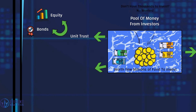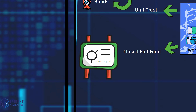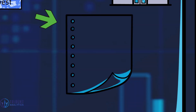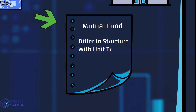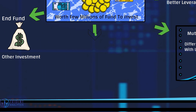Another category of collective investment scheme is the close-end fund, which is not so common in Malaysia. In short, it is a listed company whose purpose is to invest in other investments or other listed companies. We don't really have mutual funds in Malaysia — mutual funds are also a type of unit trust but differ in structure, and they are mainly found in the US market.